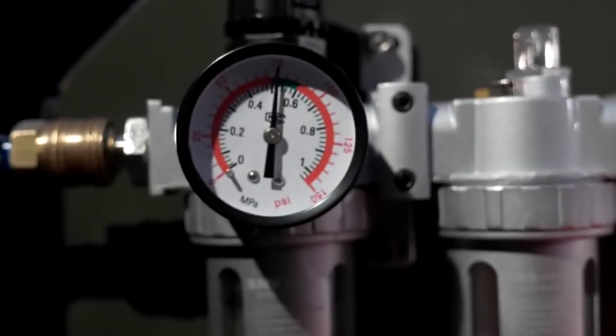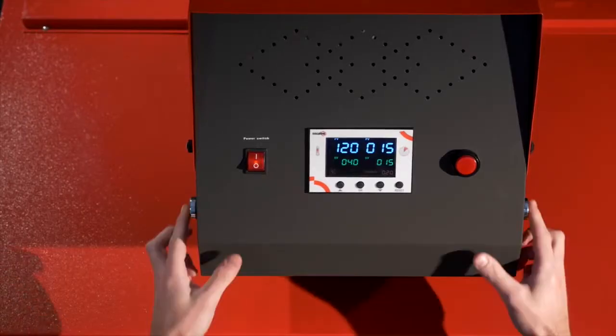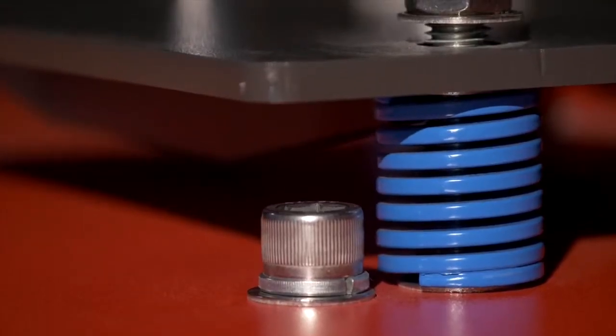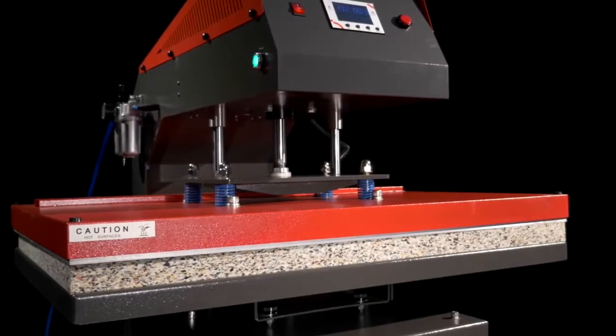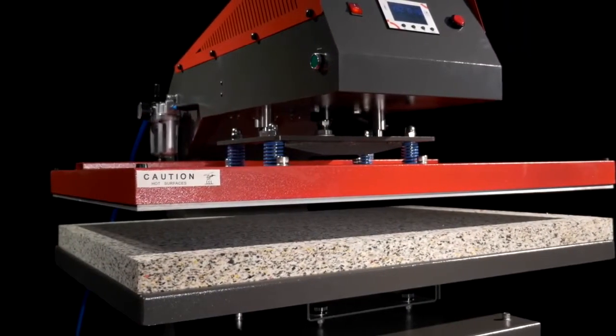A manometer is used to accurately set the pneumatic pressure. Therefore, the operating pressure remains reproducible at any time. Pneumatic pressure offers a universal advantage: the pressure on the surface is always the same, regardless of the transfer's object height.